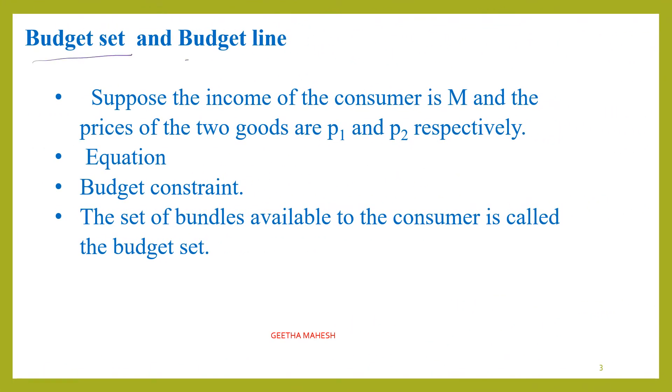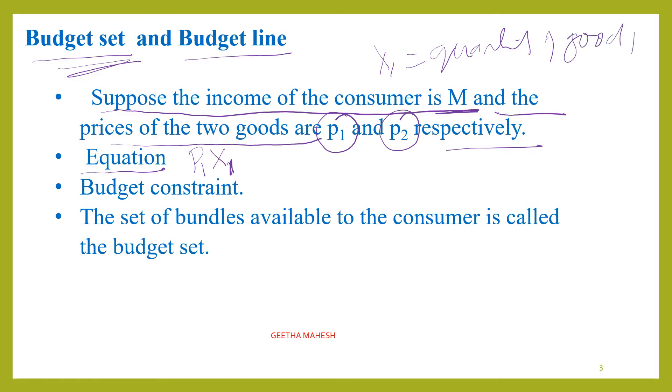The budget set includes the budget line also. For example, suppose the income of the consumer is M, and the price of two goods are p1 and p2 respectively. Then the equation becomes: price of good one times quantity of good one (x1) plus price of second good times quantity of second good should be less than or equal to consumer's income. This equation represents the budget set.